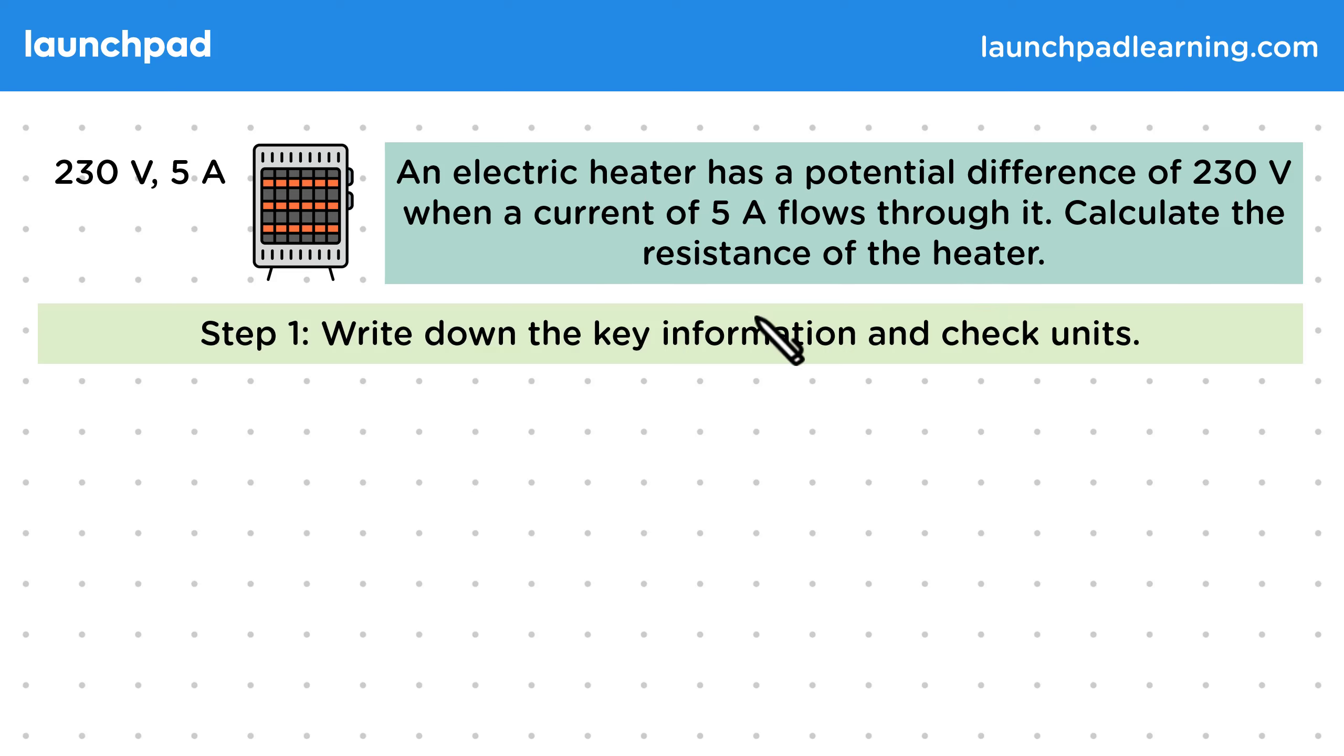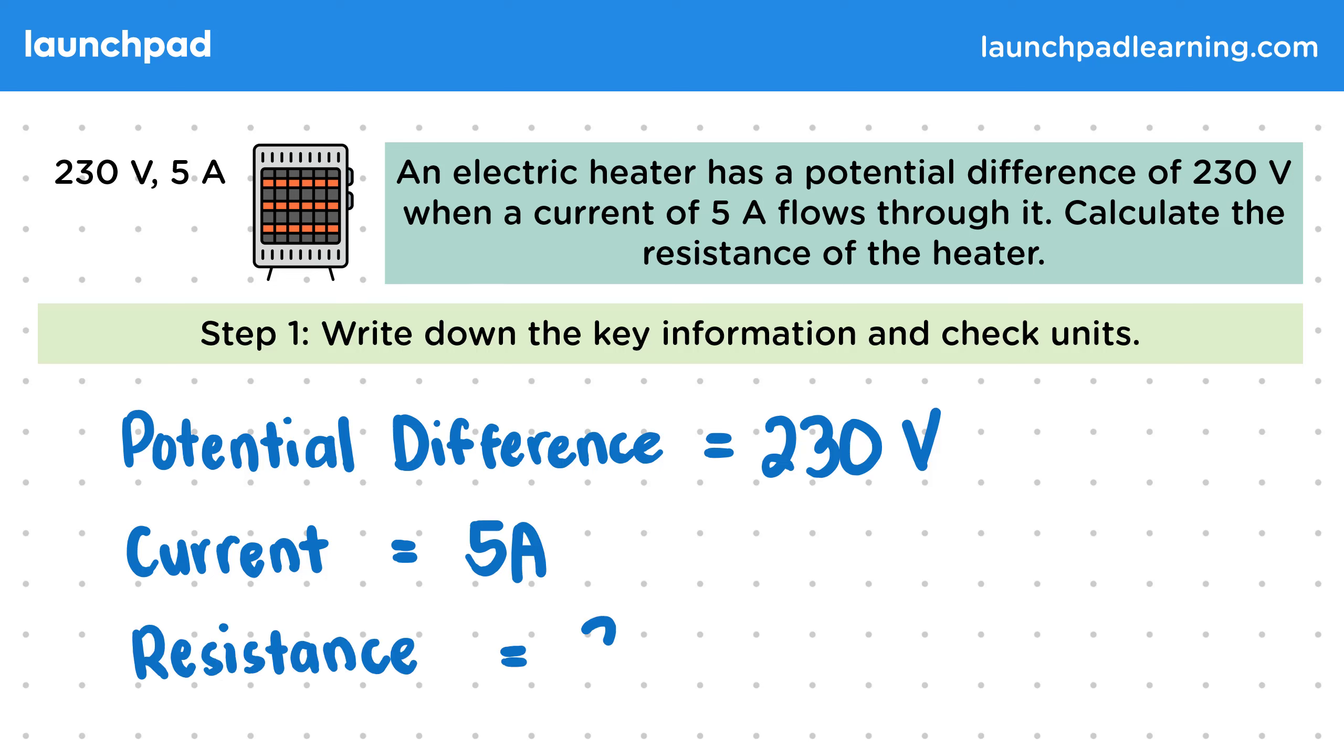So once again for the first step, let's write down the key information and check the units. The potential difference is 230 volts. The current that flows through it is 5 amps. And we want to calculate the resistance of the heater.